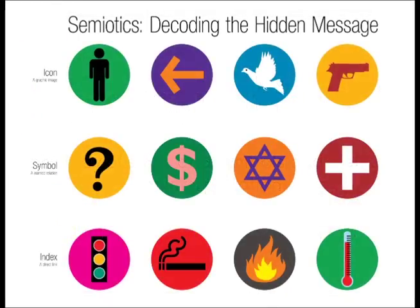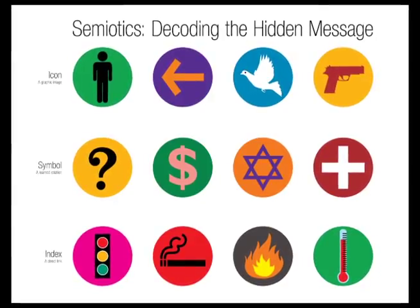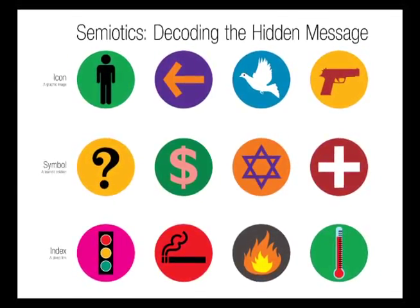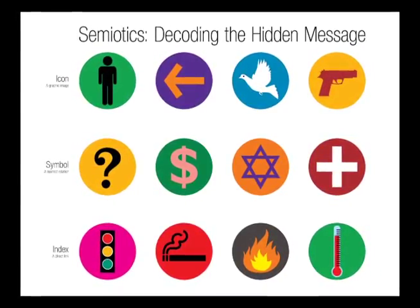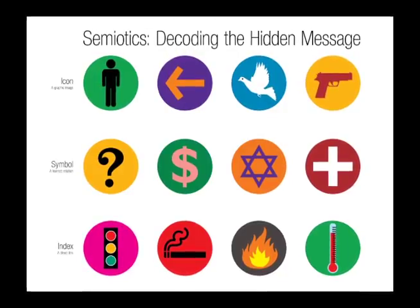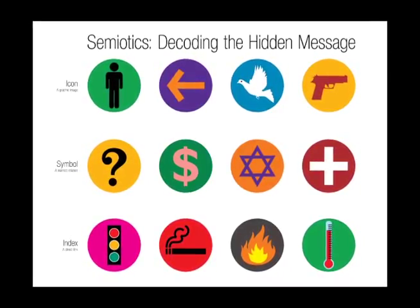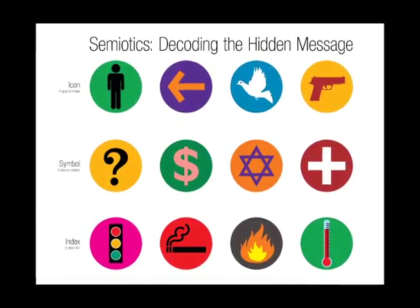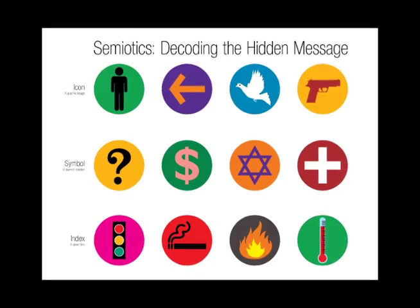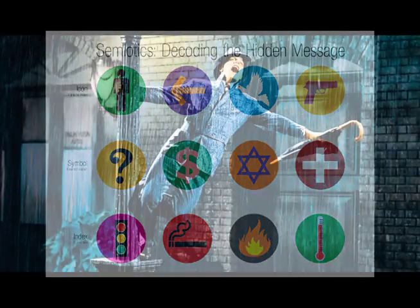Simply put, the signifier is the physical representation of a concept, symbol, or an idea that you see in an ad, and the signified is the actual concept or meaning that the ad is trying to express with the use of signifiers, which can be very different from their normal meanings depending on context.